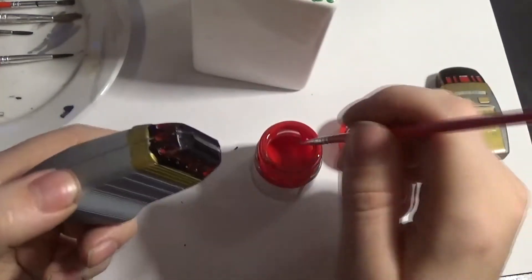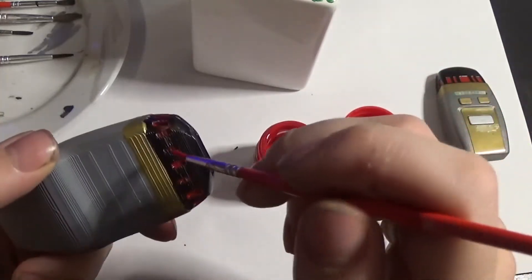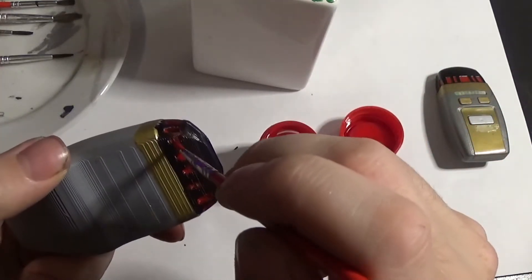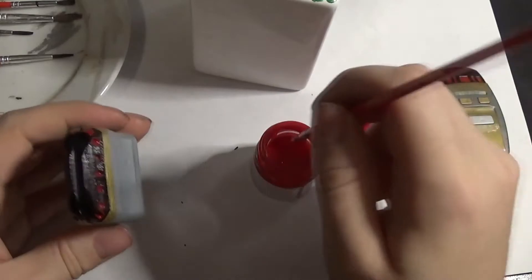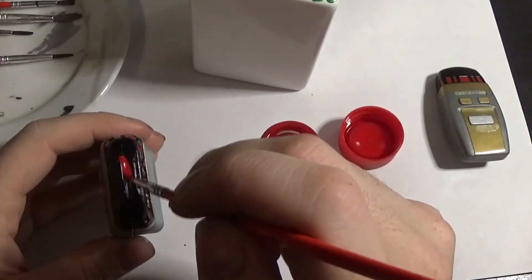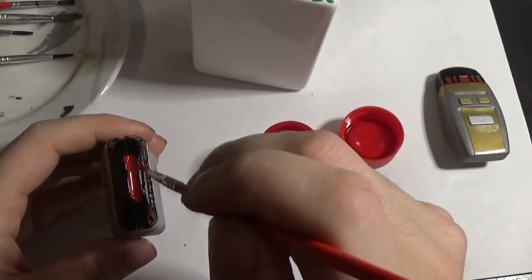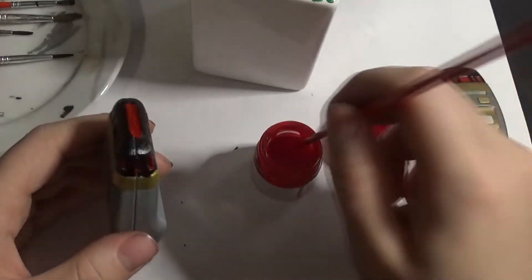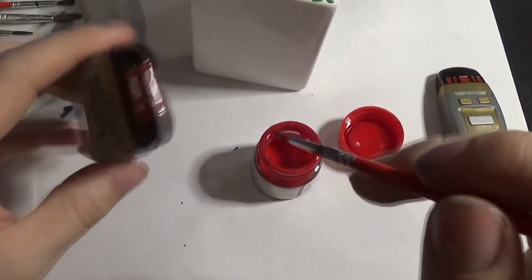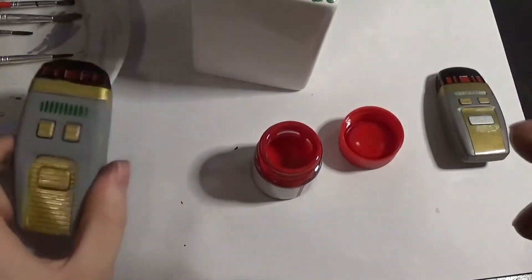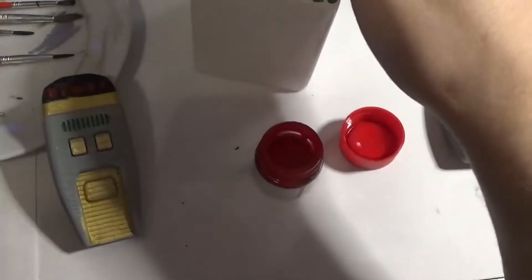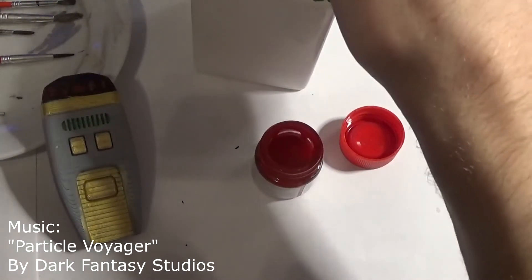Just rub that off there. Make it even worse. Silly Ben. And now the final tip where the actual phaser beam would come out. Type 1 phaser was able to stun and kill and blow someone up if I remember correctly. This is actually the second version that was seen in the show. The first version was just an all silver design with gold buttons.